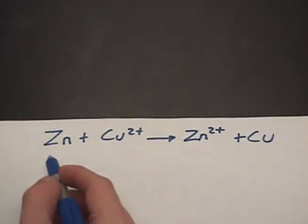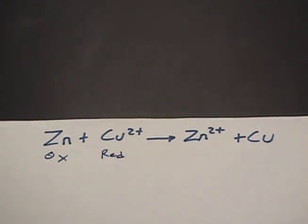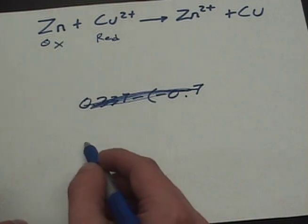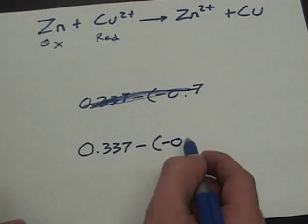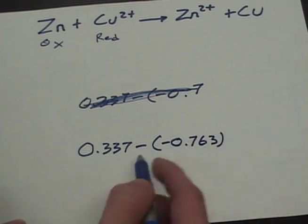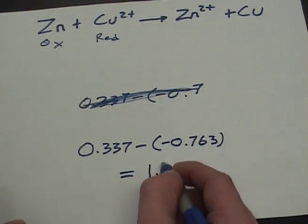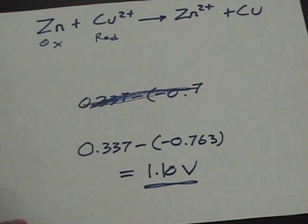Since we know that zinc is oxidizing and copper is reducing, we take the standard cell potentials and plug them in: positive 0.337 minus negative 0.763. That gives us a standard cell potential of 1.10 volts for the redox equation of copper and zinc.